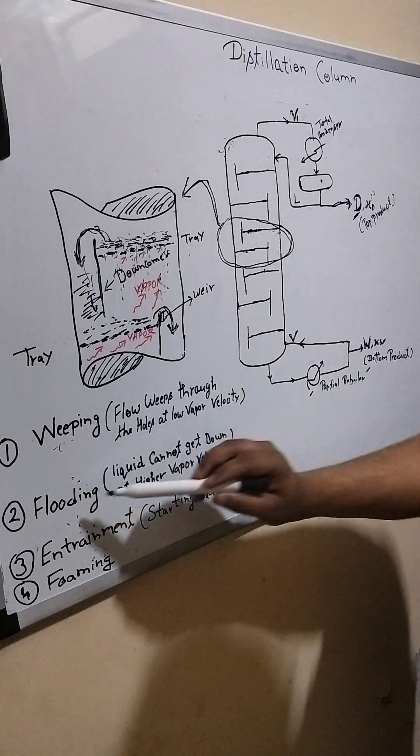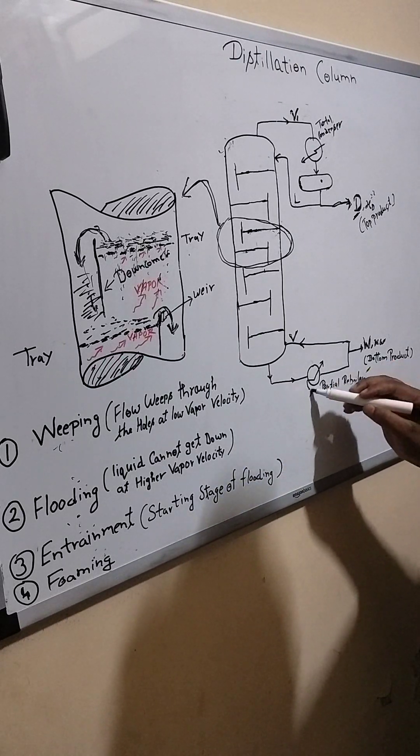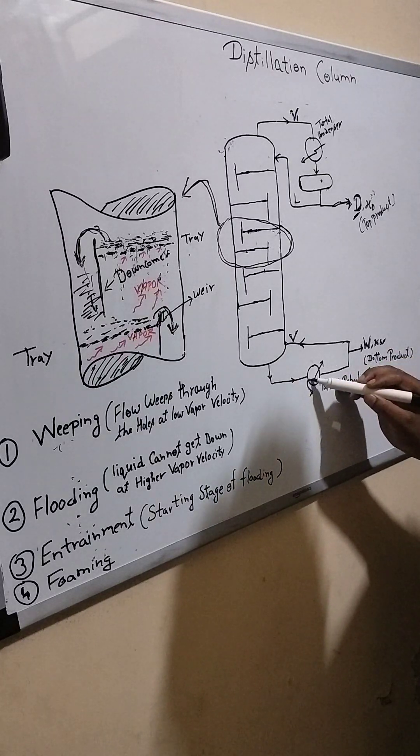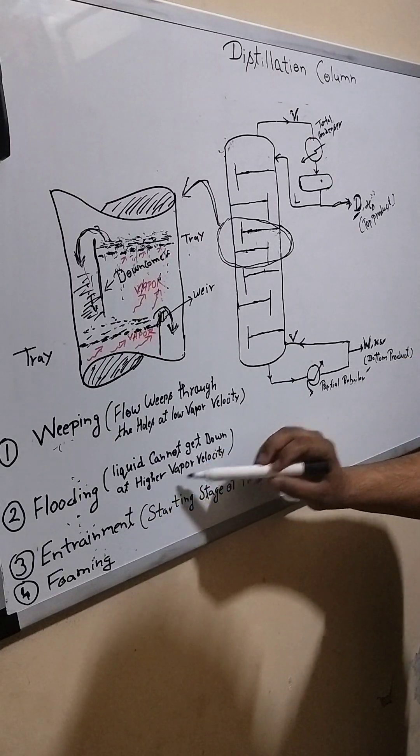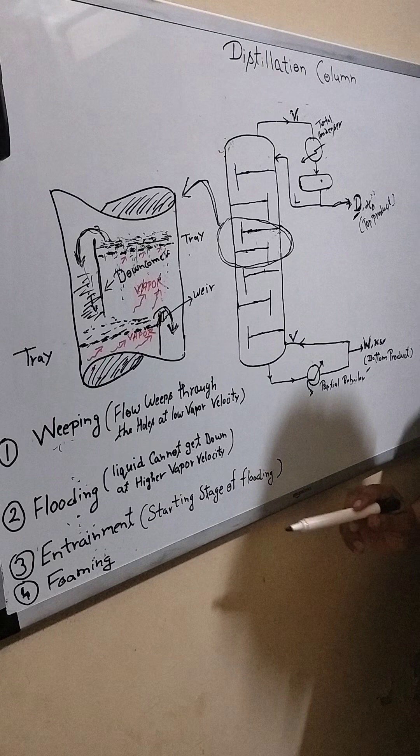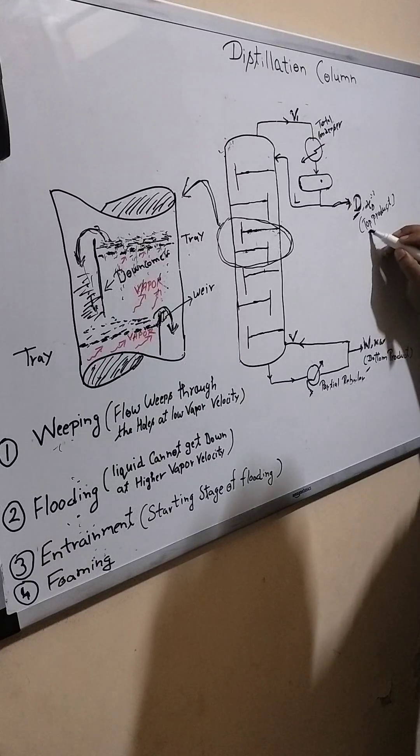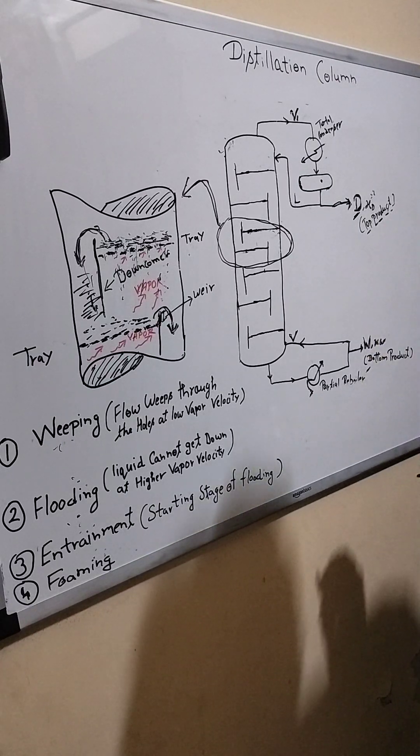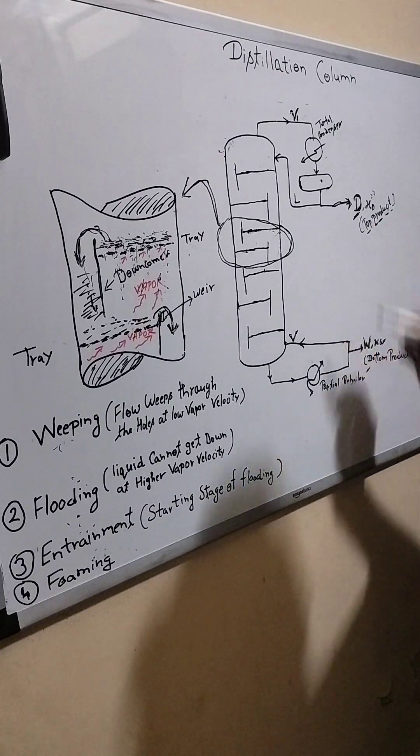So the reason of flooding may be your steam is very high. You have to see if your steam is very high. Liquid cannot get down at higher vapor velocity. So in flooding situation, you will get top product with low grade. The quality of top product will not meet your specification which you require during the running condition.